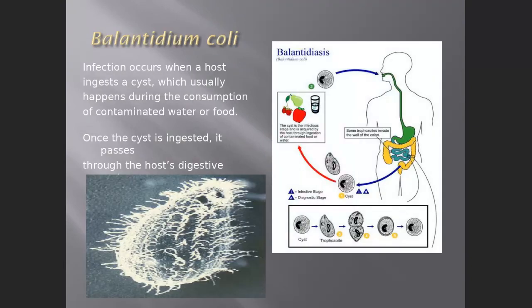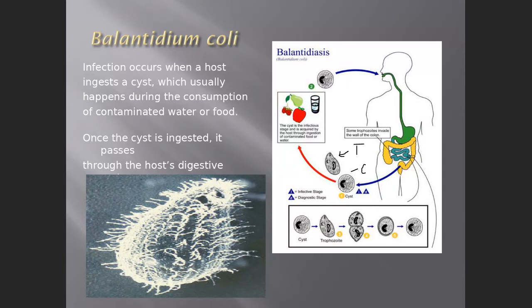The dangerous ciliate Balantidium coli causes dysentery and is fecal-orally transmitted. It has a trophozoite (more oval) and a cyst stage. Cysts can contaminate fruits and vegetables. The last major outbreak of a protozoal infection in the US was Cyclospora on strawberries. Strawberry harvesting season is approaching in April-May, so watch for contamination reports.